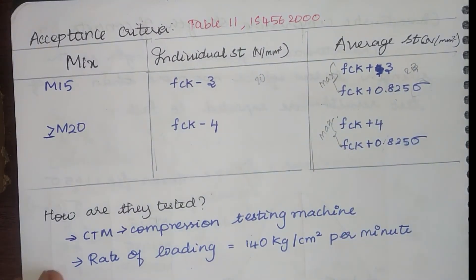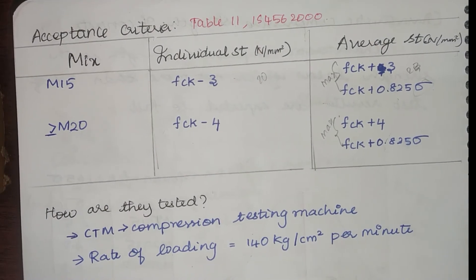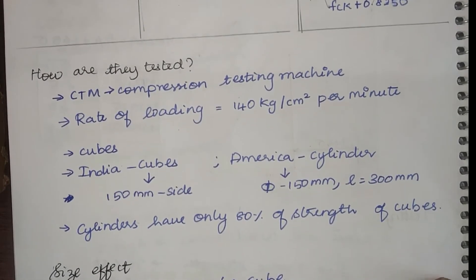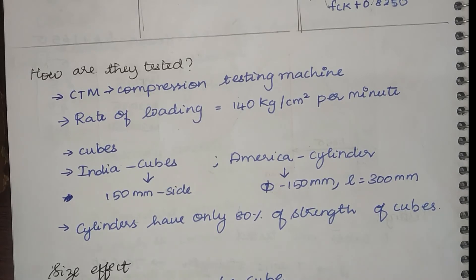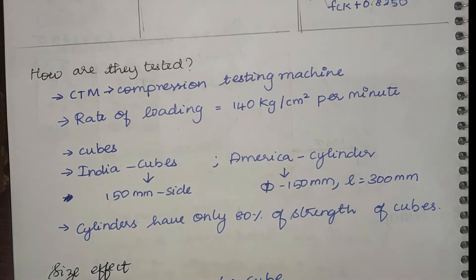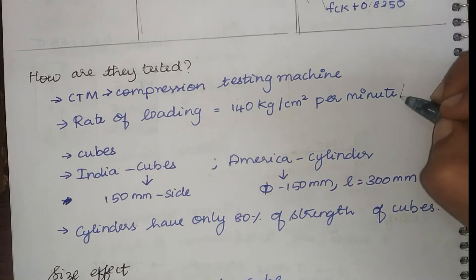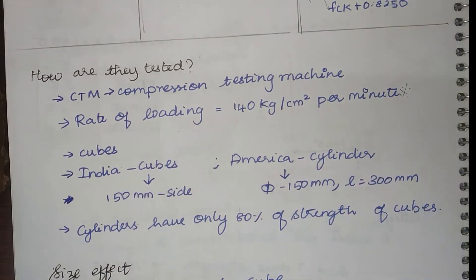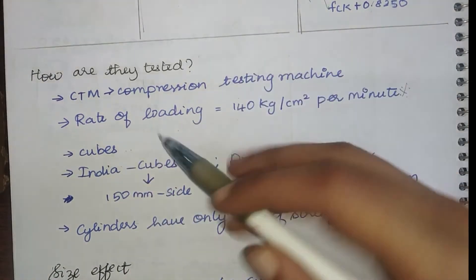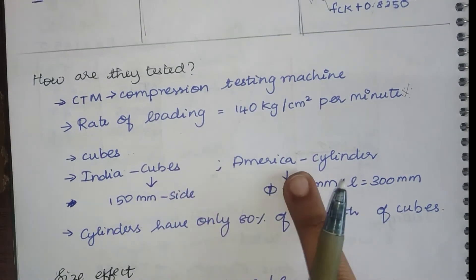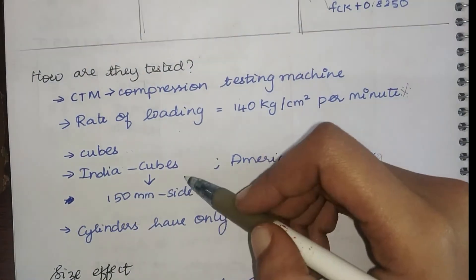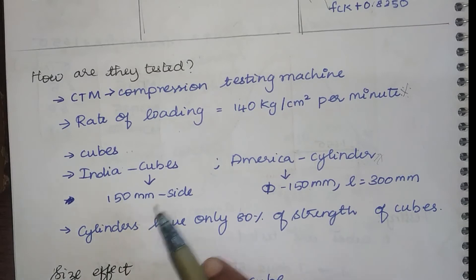Now that we have seen that we will be casting cubes, we will see how they are tested actually in the laboratory. For testing we use CTM which is compression testing machine. The rate of loading is 140 kg per centimeter square per minute. This is an important one mark which has been asked in so many competitive examinations. We will be casting cubes in India, whereas in America they use cylinders. The side of the cube is 150 mm, whereas in America the diameter is 150 mm, the length of the cylinder is 300 mm.